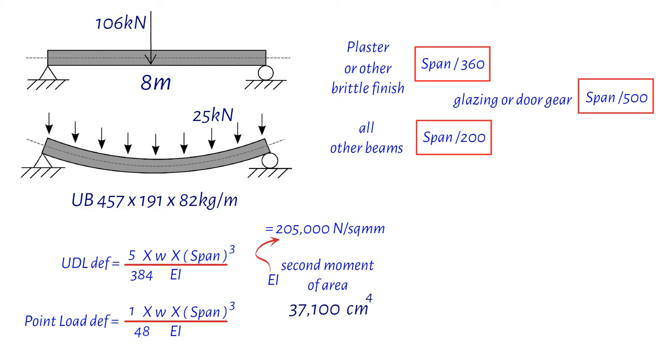First up, what's the maximum permissible deflection? Take 8,000 millimeters and divide it by 360, giving us 22.22 millimeters. We don't want to exceed that.